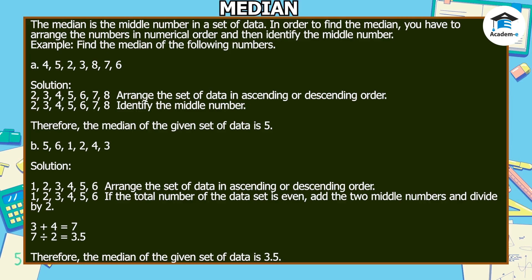To solve, arrange the set of data in ascending or descending order, then identify the middle number. Therefore, the median of the given set of data is 5.